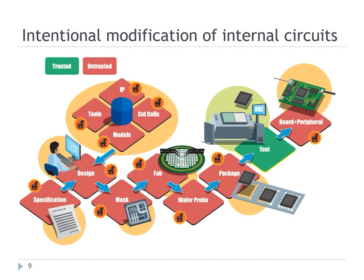Next, I introduce information leakage due to intentional circuit modification. This threat happens within untrusted supply chains. An attacker intentionally modifies the circuit and device during the IC manufacturing process and equipment assembly, intentionally changing the operation of the circuit and system. Some circuit modifications cause degradation of immunity and an increase in emissions. As a result, these modifications increase the feasibility of passive and active attacks.